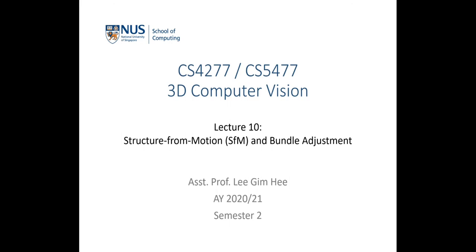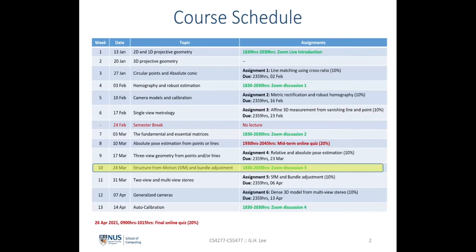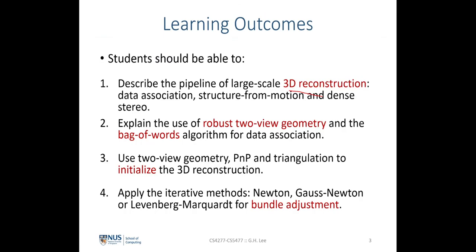Hello everyone, welcome to the lecture on 3D computer vision. Today we are going to talk about structure from motion and bundle adjustment. Hopefully by the end of today's lecture you'll be able to describe the pipeline of large scale 3D reconstruction. It consists of three parts: data association, structure from motion, and dense stereo algorithm.